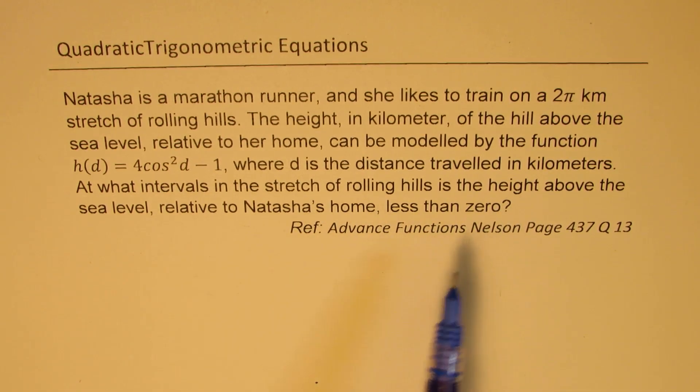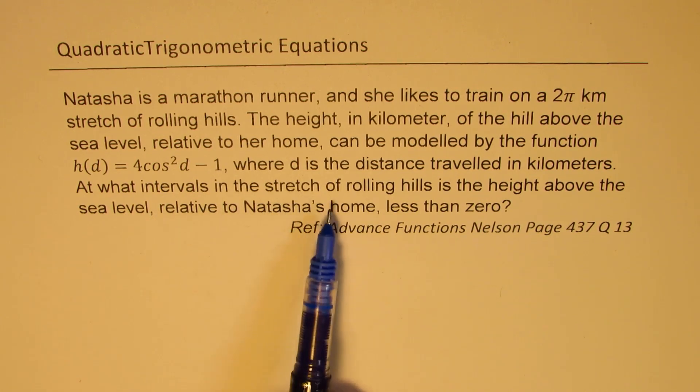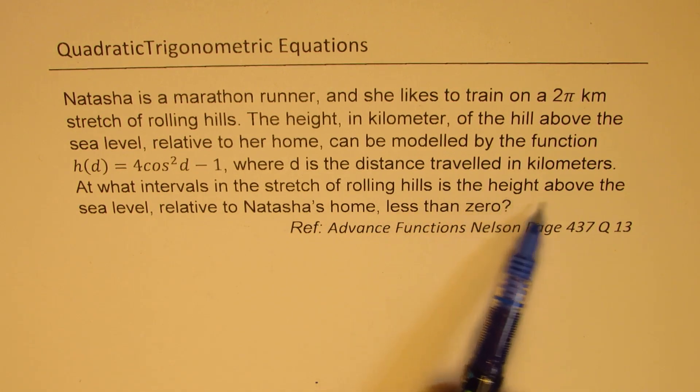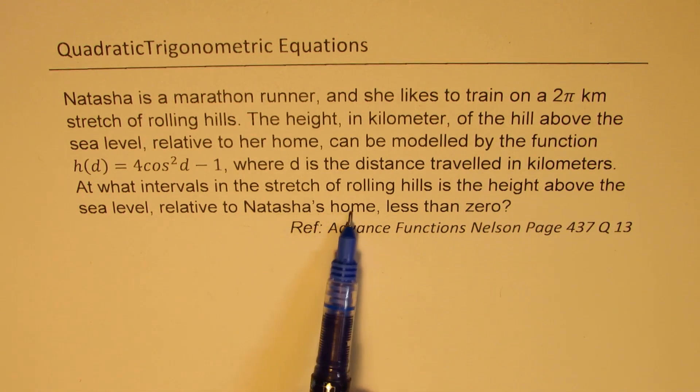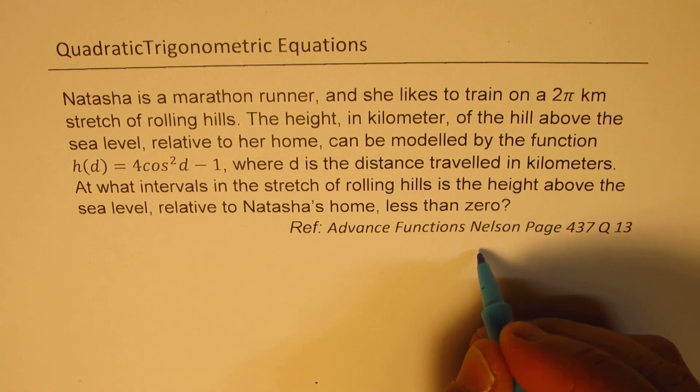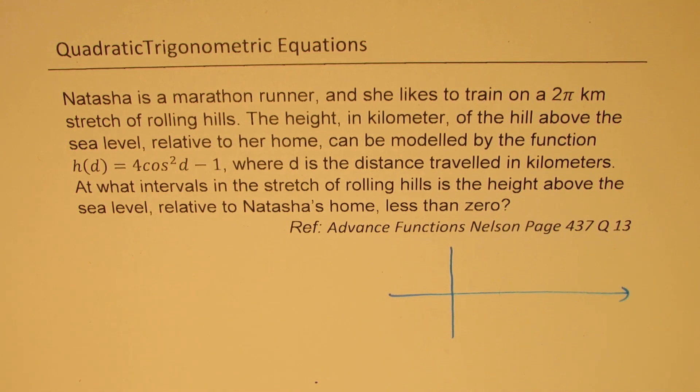So the last statement is kind of tricky, which is at what intervals in the stretch of rolling hills is the height above the sea level, which is h(d) relative to Natasha's home, less than zero. So that's what we need to figure out. So I hope now this statement is absolutely clear. So let's make a rough sketch of this height function and that will help us to really answer the question better.